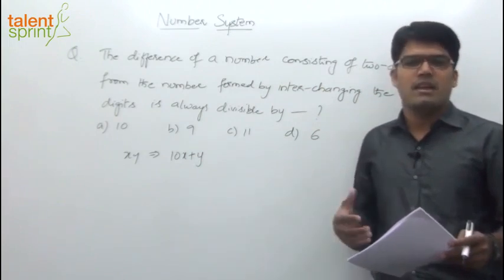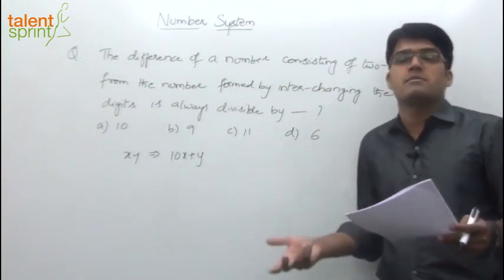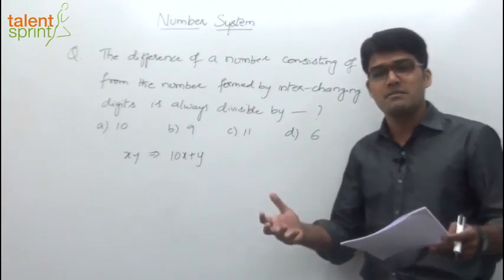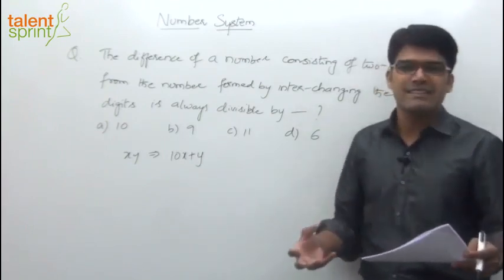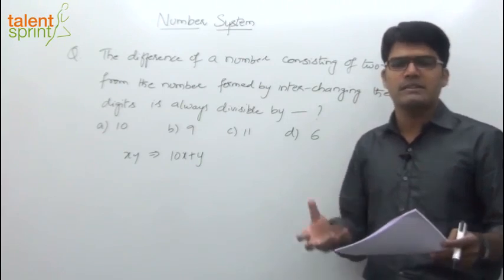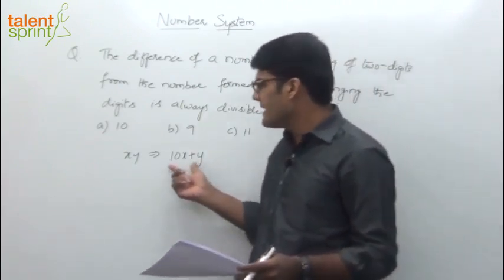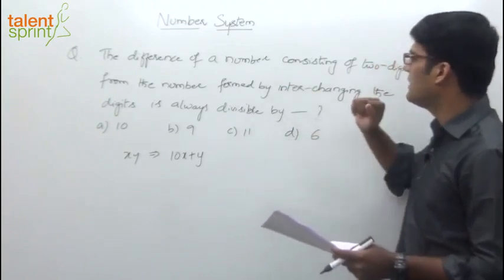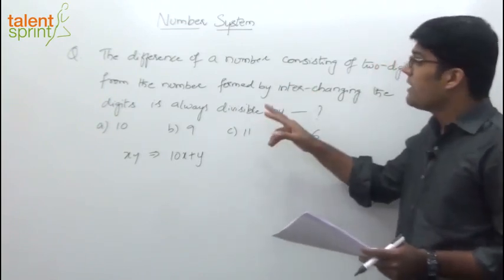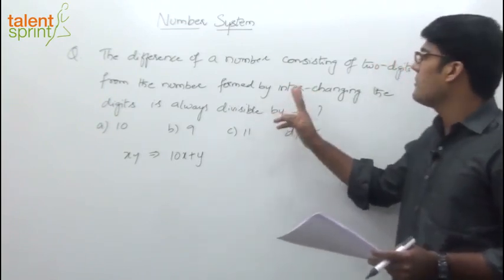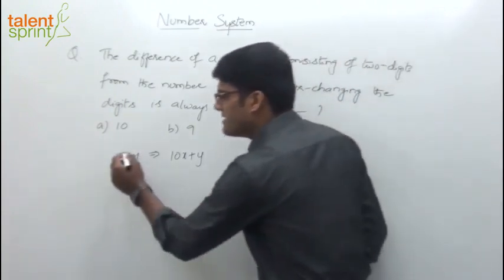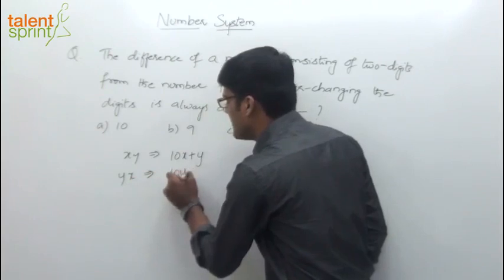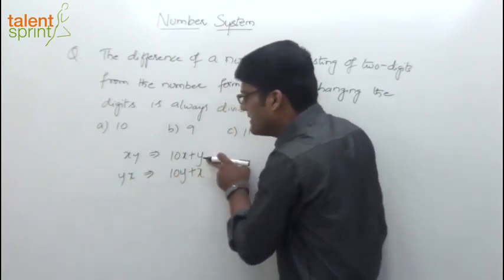We have got 10 different digits — 10 different symbols we can say — which are called as digits. And all the numbers in this number system are made up of any of these 10 digits or a combination of some of these 10 digits. So the number should always be taken as 10x plus y — this is the original number. Now we have to find the difference of this two-digit number from the number formed by interchanging the digits. When you interchange the digits, xy becomes yx, and this number is represented as 10y plus x.